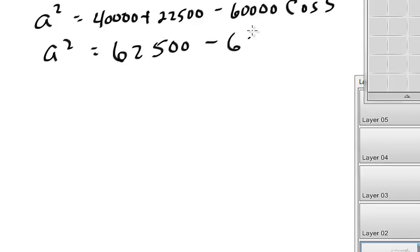60,000 times cosine 5 degrees is 59,771. So if I take 62,500 and subtract cosine 5, that's going to give me a final answer here. I did all this on the calculator.